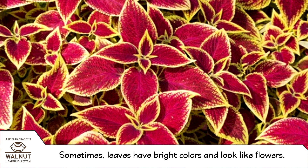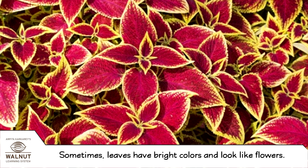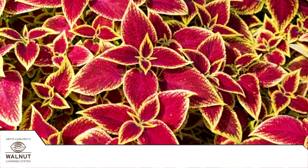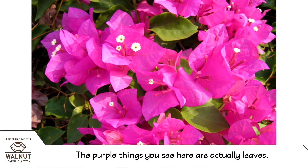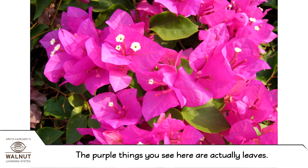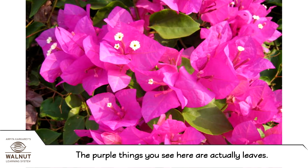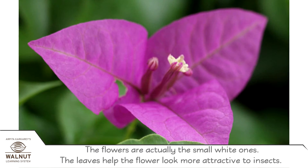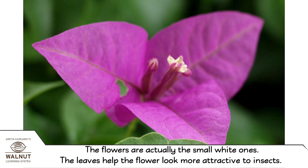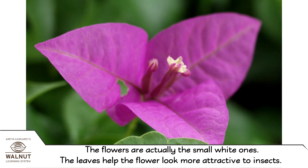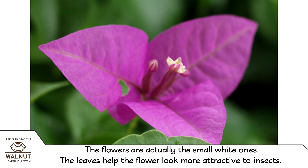Sometimes, leaves have bright colors and look like flowers. The purple things you see here are actually leaves. The flowers are actually the small white ones. The leaves help the flower look more attractive to insects.